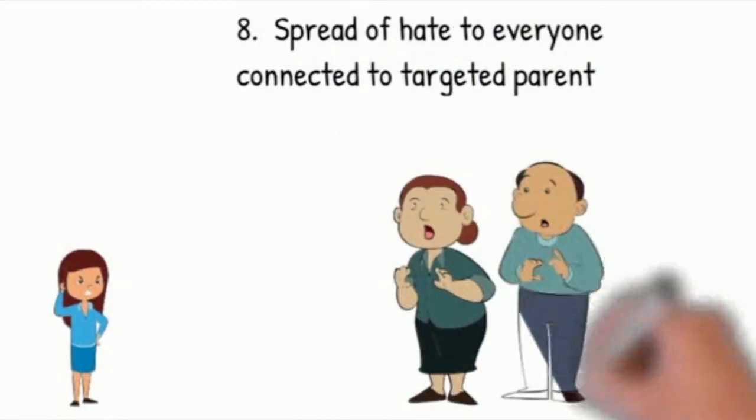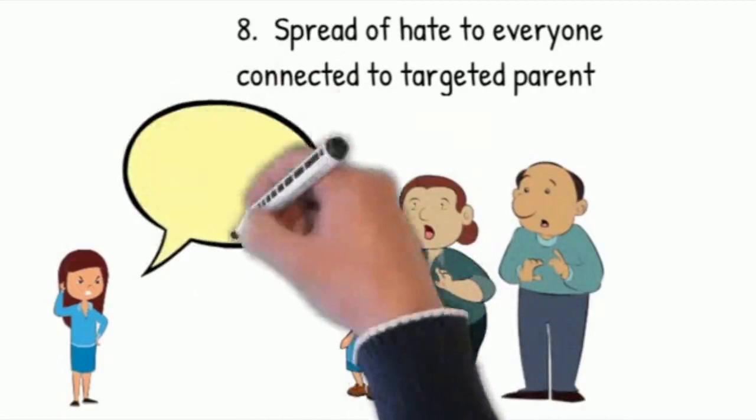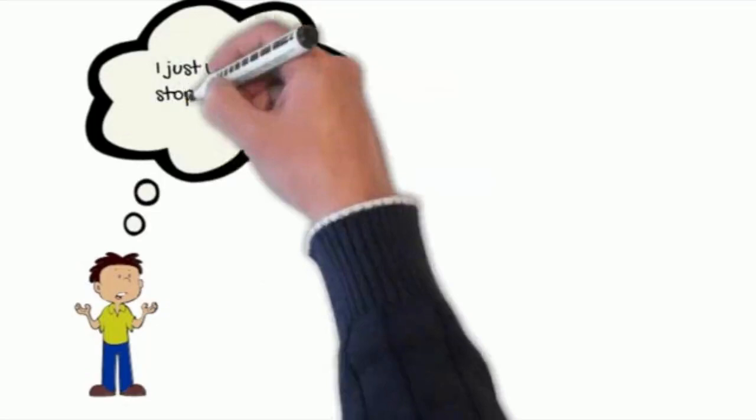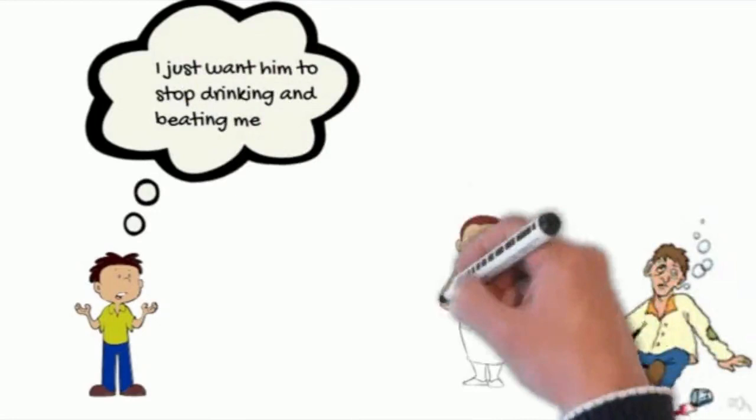Even abused children don't show these eight behaviors. Abused children still have positive memories of the abusive parent. They provide information of actual mistreatment. They don't start worshiping the other parent. They can still see the favored parent's faults. They don't generally lack remorse. They're just mad that the parent hurt them, but they still feel badly when they set appropriate limits with the abusive parent.